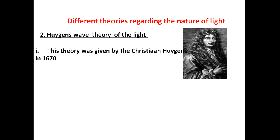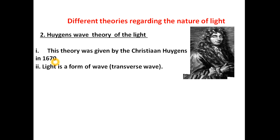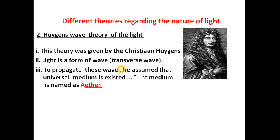We are discussing the most important points of Huygens' Wave Theory of Light. According to this theory, he proposed that light is transferred from one place to another in the form of a wave. The waves may be longitudinal waves, and he proposed that the waves transferring light are transverse waves. To propagate these waves, he assumed that a universal medium exists, and for propagation a medium is required.